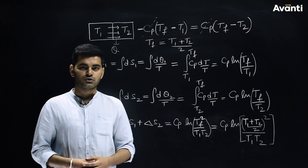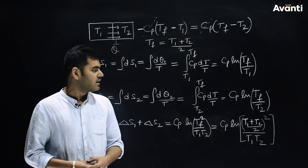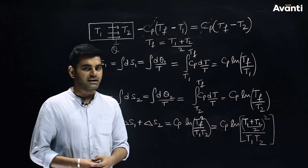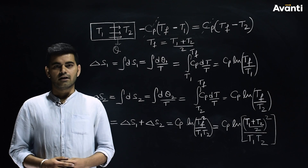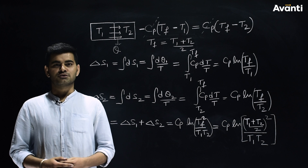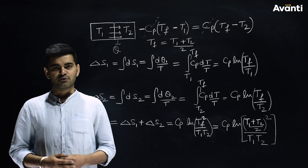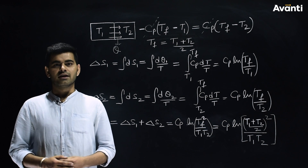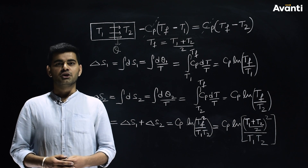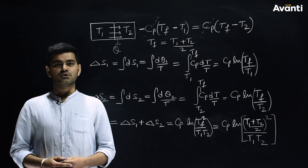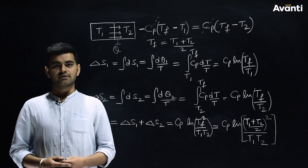Substituting the value of Tf, it comes out to be Cp·ln[(T1 + T2)² / (4·T1·T2)]. I hope you understood how to approach this question, and if questions with a similar concept come again, you will be able to do it correctly.